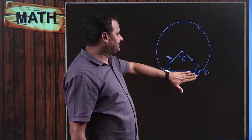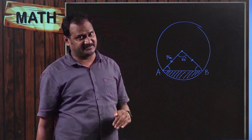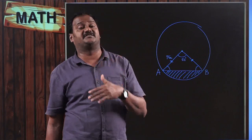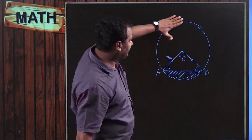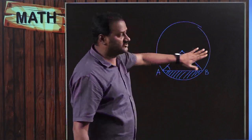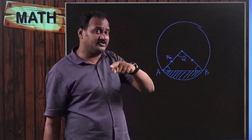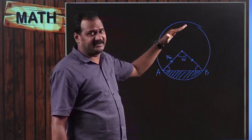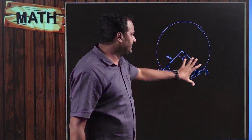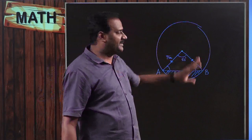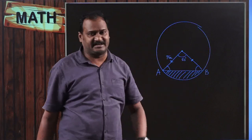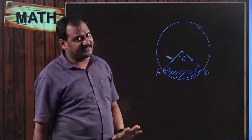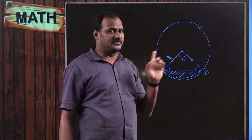After finding the area of the minor segment, if you are asked to find the area of the major segment — the remaining entire portion — you simply compute: area of major segment = area of entire circle − area of minor segment.